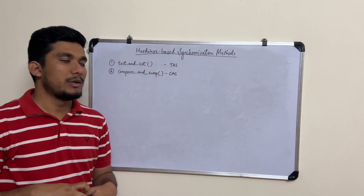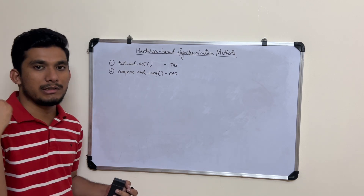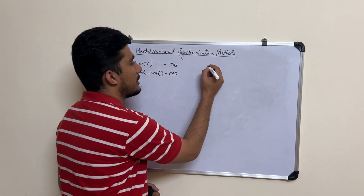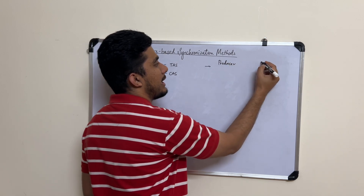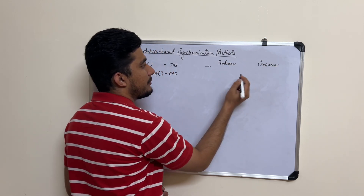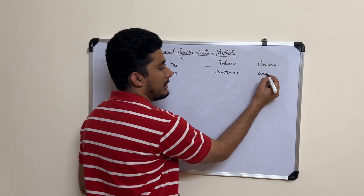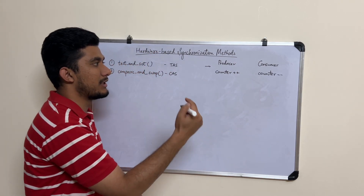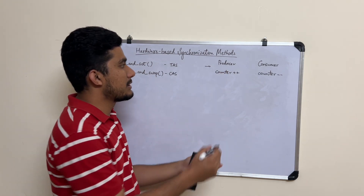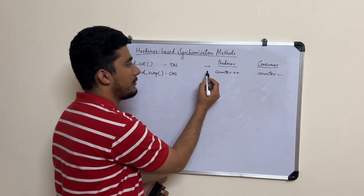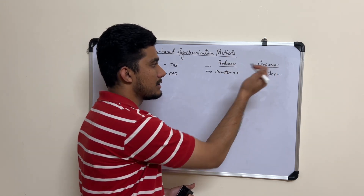In one of the previous videos we've also seen what a race condition is — I'll put a link in the description. In that video we saw the producer-consumer problem, where there was a shared variable called counter being incremented by the producer and decremented by the consumer.